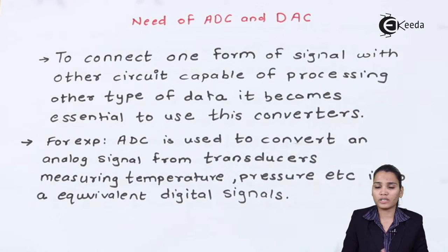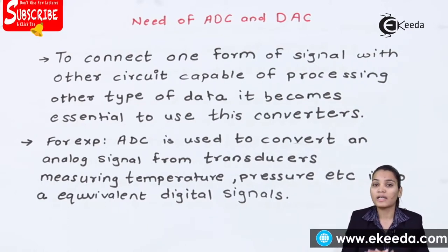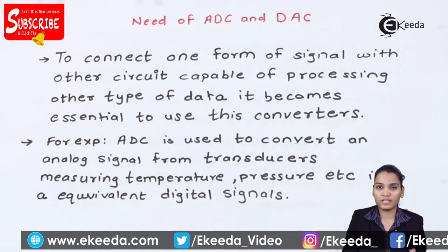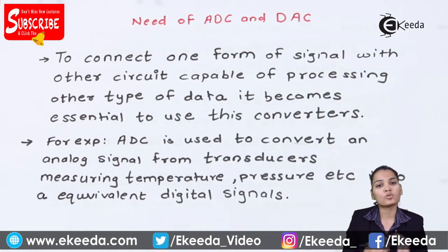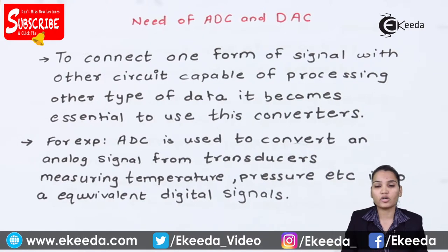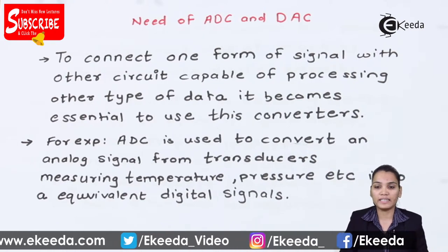Whenever we require the analog data but we have the data in the form of digital, we need to convert the analog data to the digital data — we use ADC. And whenever we require to convert the digital data to the analog data, we use DAC. So let's see what is the need of ADC and DAC.